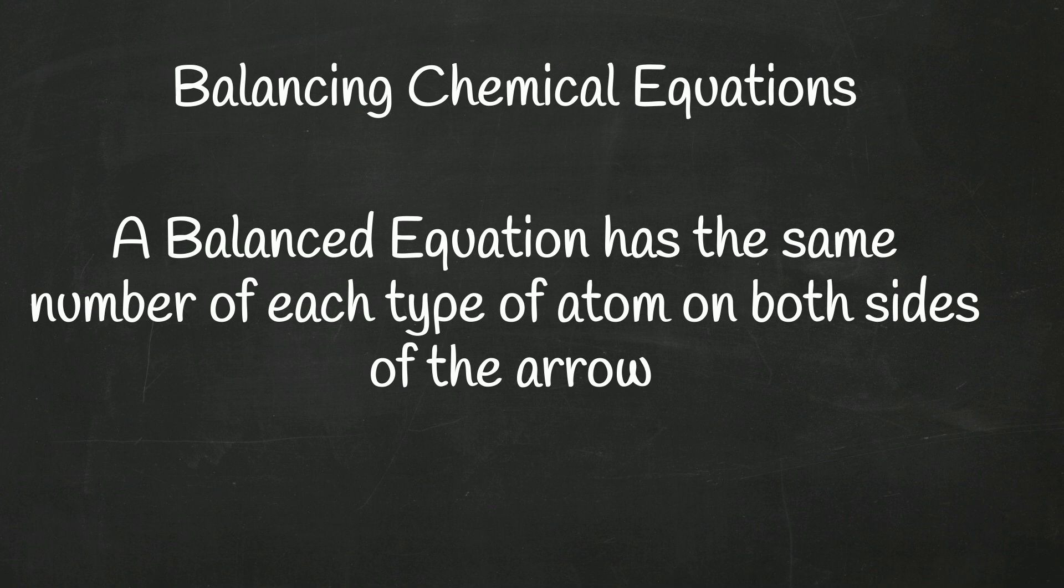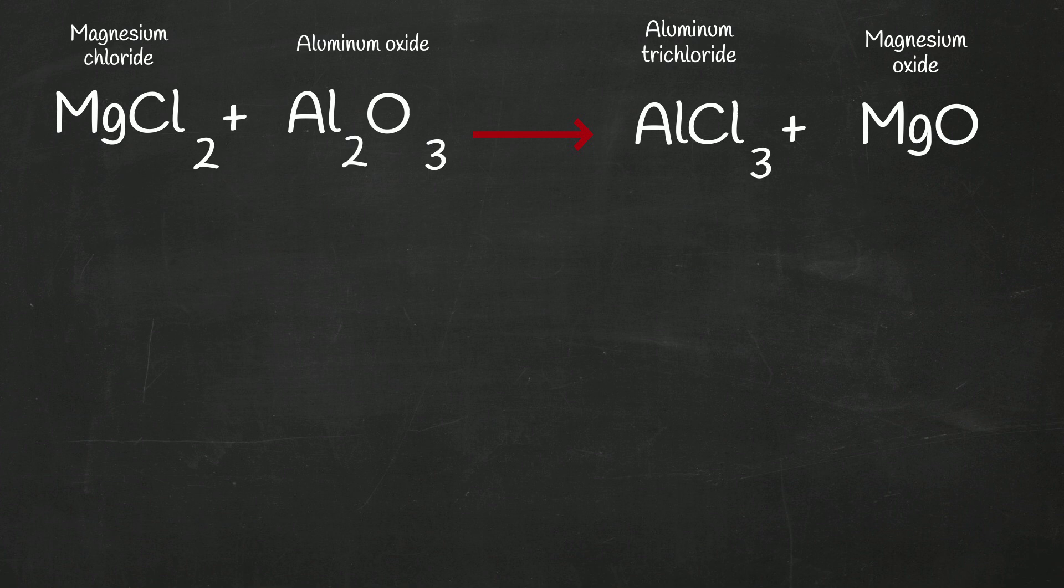So I'm going to work this example and it will go through basically the steps on balancing a chemical equation. Okay, step one, I'm going to go ahead and draw a line down from the arrow.